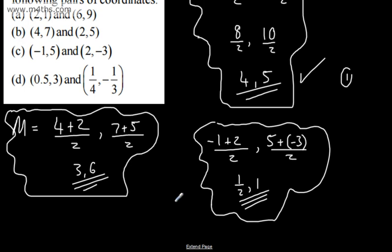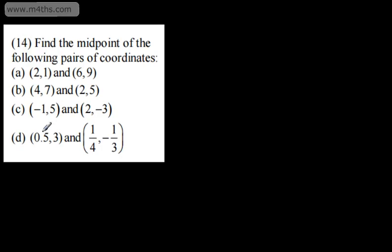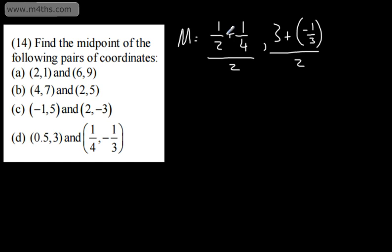With this one, I've got 0.5 and 3, and then a quarter and negative 1 third. I'm just going to write this as a half. So what we can say then is the midpoint is going to be 1 half plus 1 quarter divided by 2. Then we're going to have 3 plus negative 1 third divided by 2.